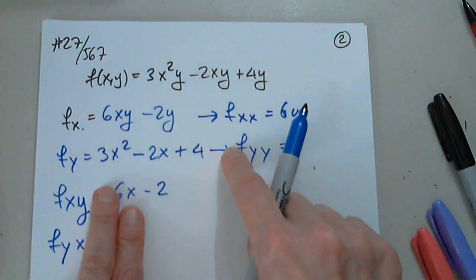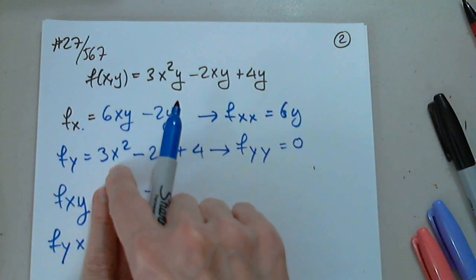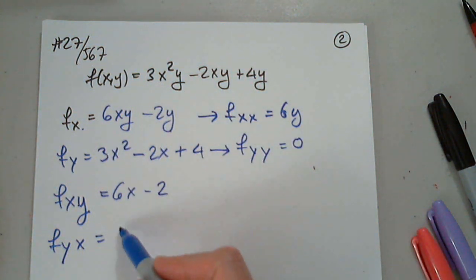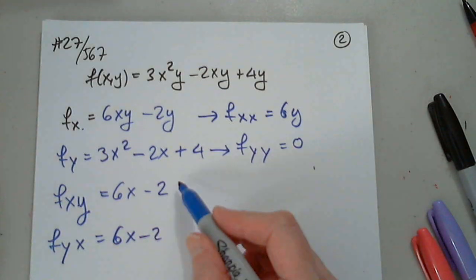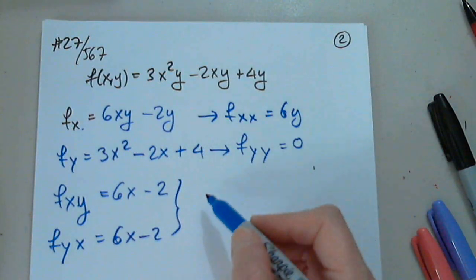We are differentiating this with respect to x. 3x squared prime is 6x. Negative 2x prime is negative 2. Good. And, of course, 4 prime is 0.